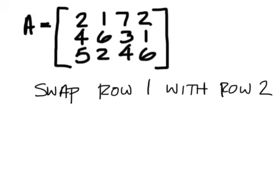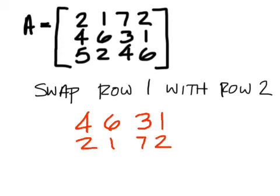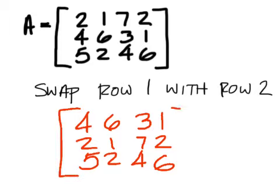Your final answer here should have 4, 6, 3, 1 in the first row and 2, 1, 7, 2 in the second and of course the last one will stay in there as well. Not enough time for a bonus on this one so we will skip it.